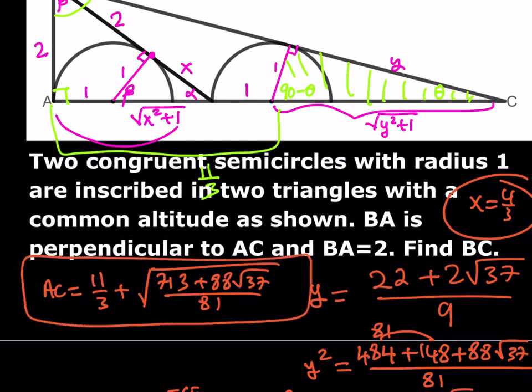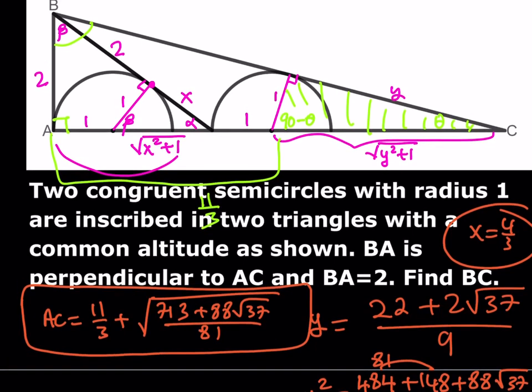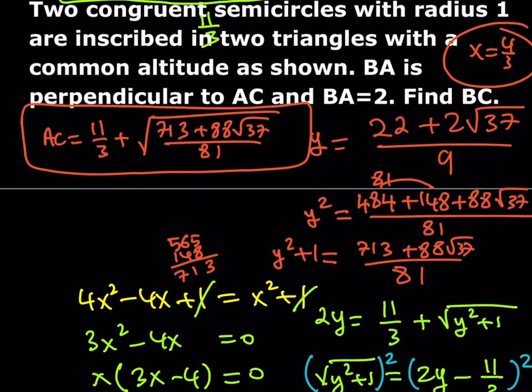Squaring y would be messy to square root afterward. Instead, notice that AC is actually 2 times y. Because of the 1-to-2 similarity ratio between the smaller and larger triangle, y is half of AC, so AC equals 2y.